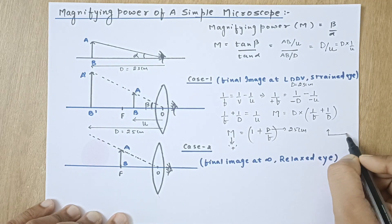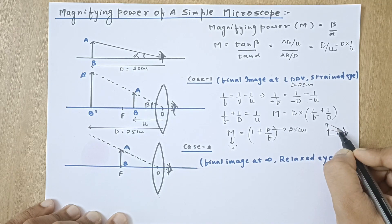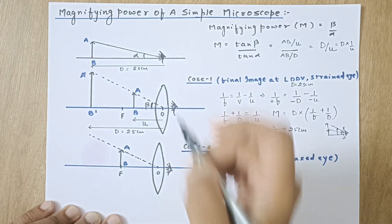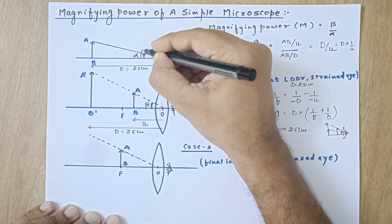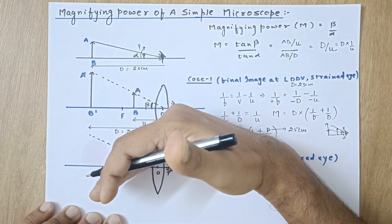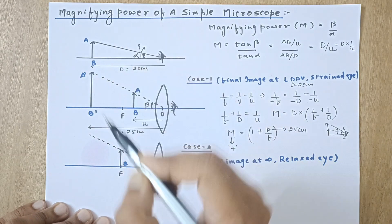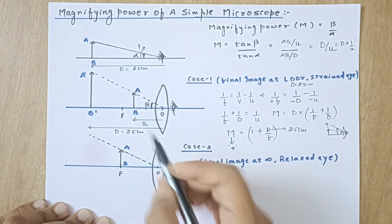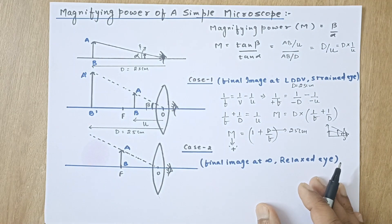The positive magnifying power means two things: first, the angle is magnified in the same direction — alpha and beta are both along the same direction. Second, the image is upright with respect to the object. Had the image been below the principal axis, beta would be in the negative direction and magnifying power would be negative. Magnifying power has no unit.